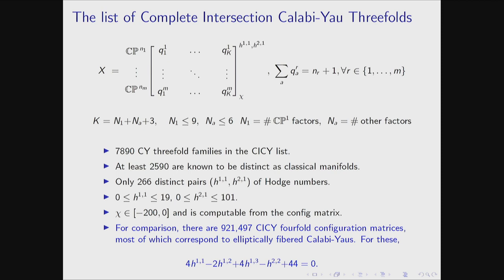Although this list has been around for a while, only at least 2,590 are known to be distinct as classical manifolds — it's not really known if there are equivalences among the rest. There are only 266 distinct Hodge pairs. H11 ranges between 0 and 19, and H21 ranges between 0 and 101. If given a choice to machine learn one of these Hodge numbers, I would probably go with H11 since it doesn't have as much range.